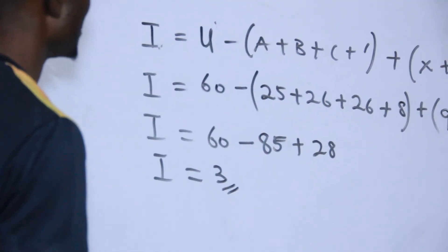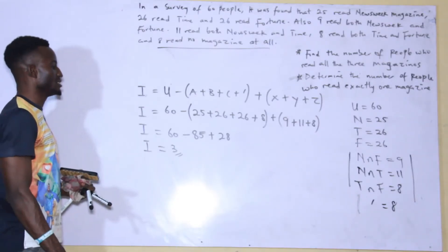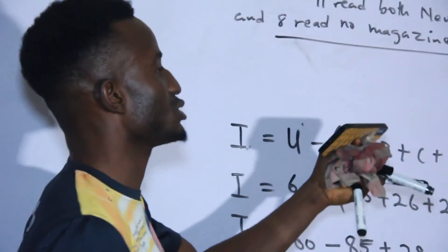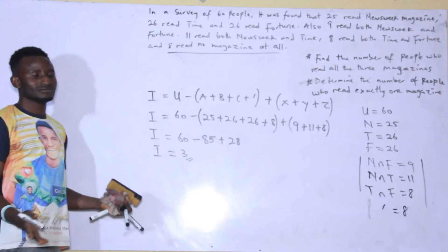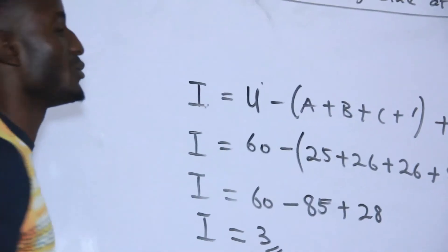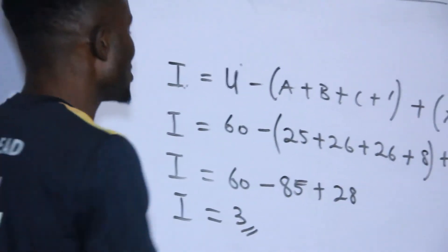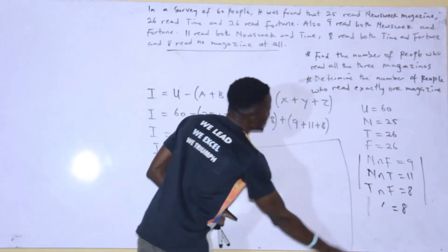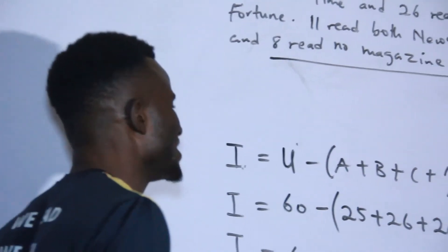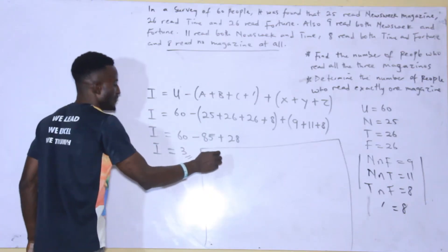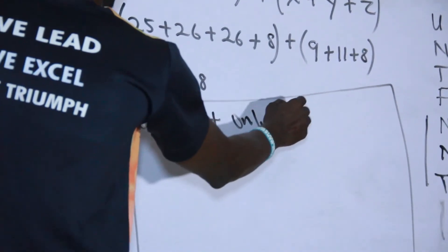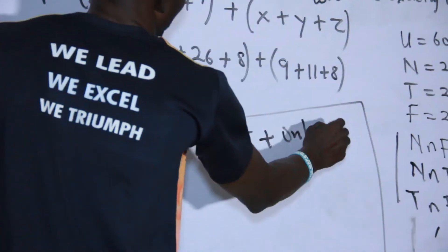So if the final answer is 3, then those that read all 3 magazines is 3. Without using the Venn diagram method, we are able to find those that study all 3. The next question says: find those that read exactly one magazine. Exactly one magazine means only one of the magazines.